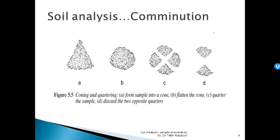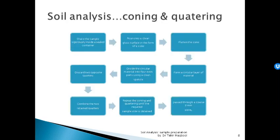So, we have discussed soil sample preparation in this lecture. We covered the properties and categories, drying and comminution — which involves grinding and homogenizing — and coning and quartering. The analysis to be done before drying was also discussed, including volatile compounds and reduced forms. This completes the lecture on sample preparation for soil analysis.